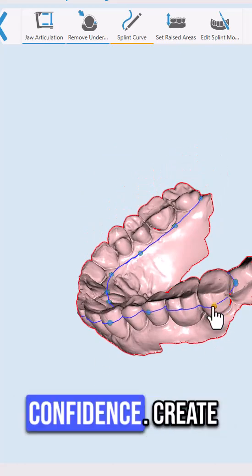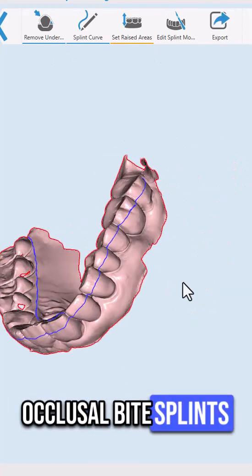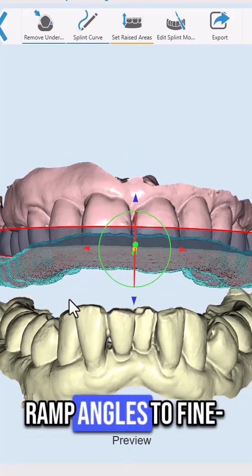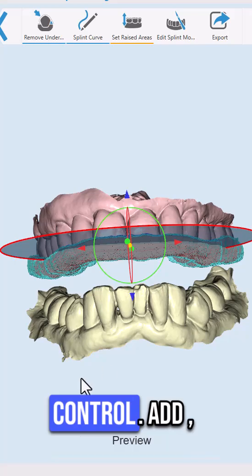Design with confidence. Create occlusal bite splints with BlueSkyPlan. From setting the occlusal plane and ramp angles to fine-tuning contacts, you have complete control.